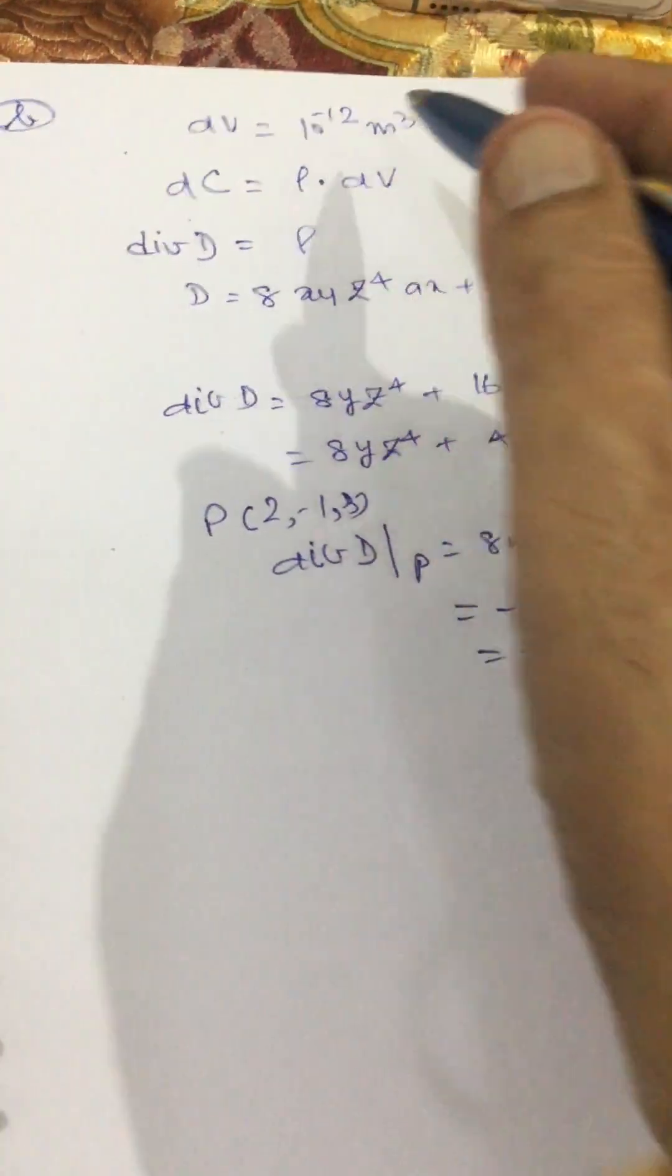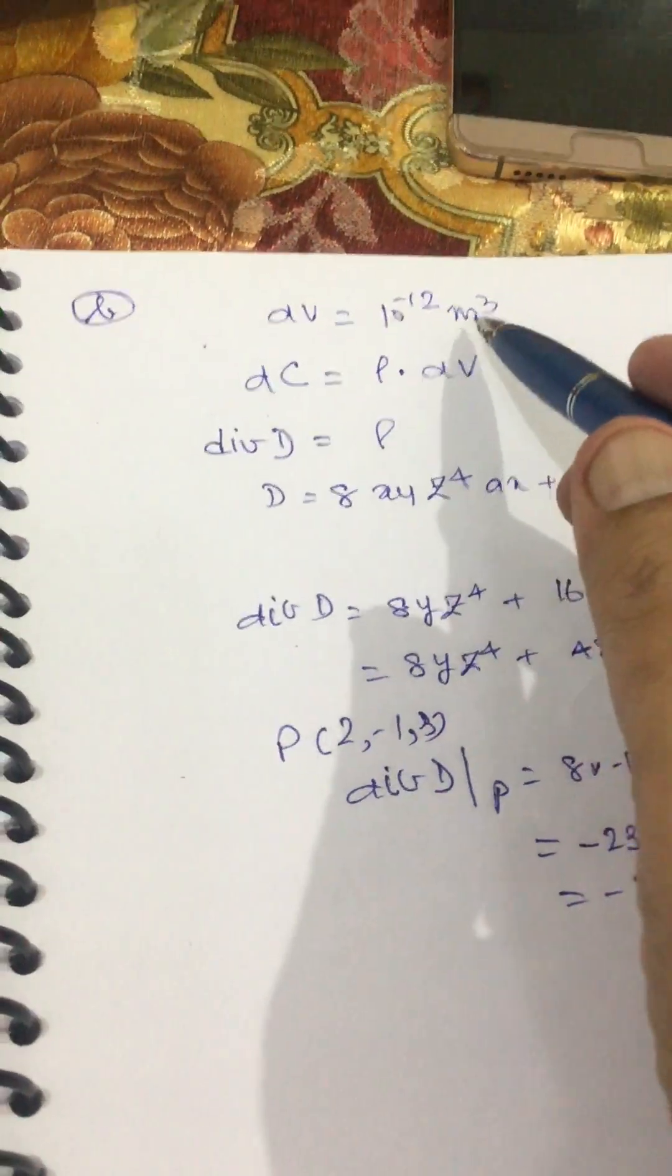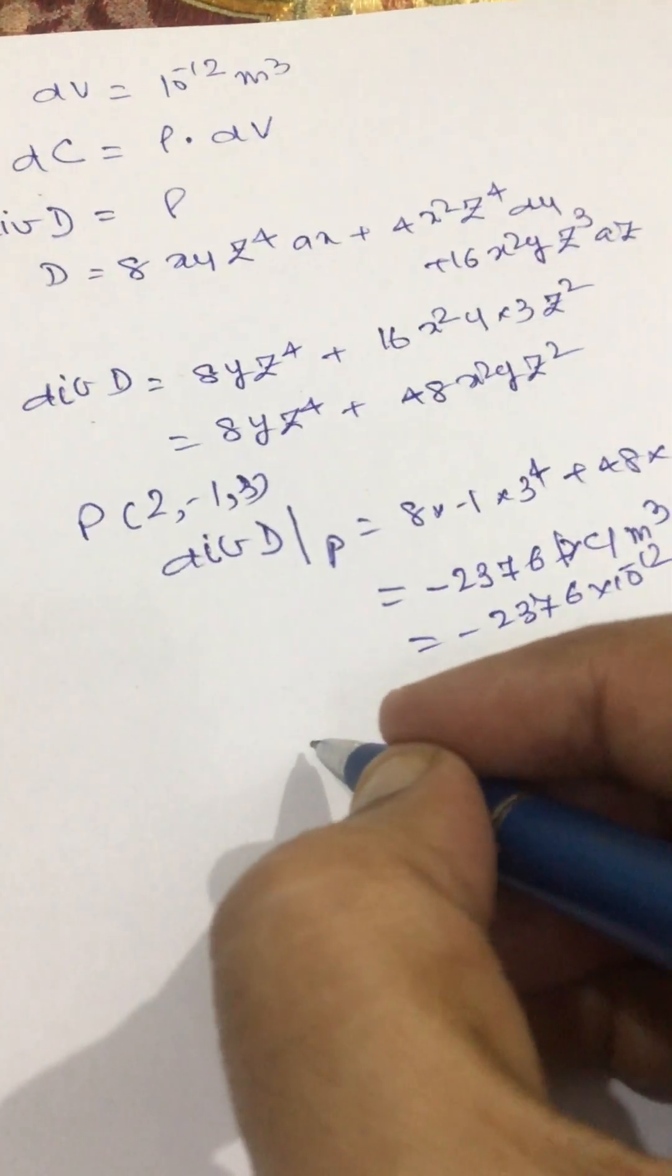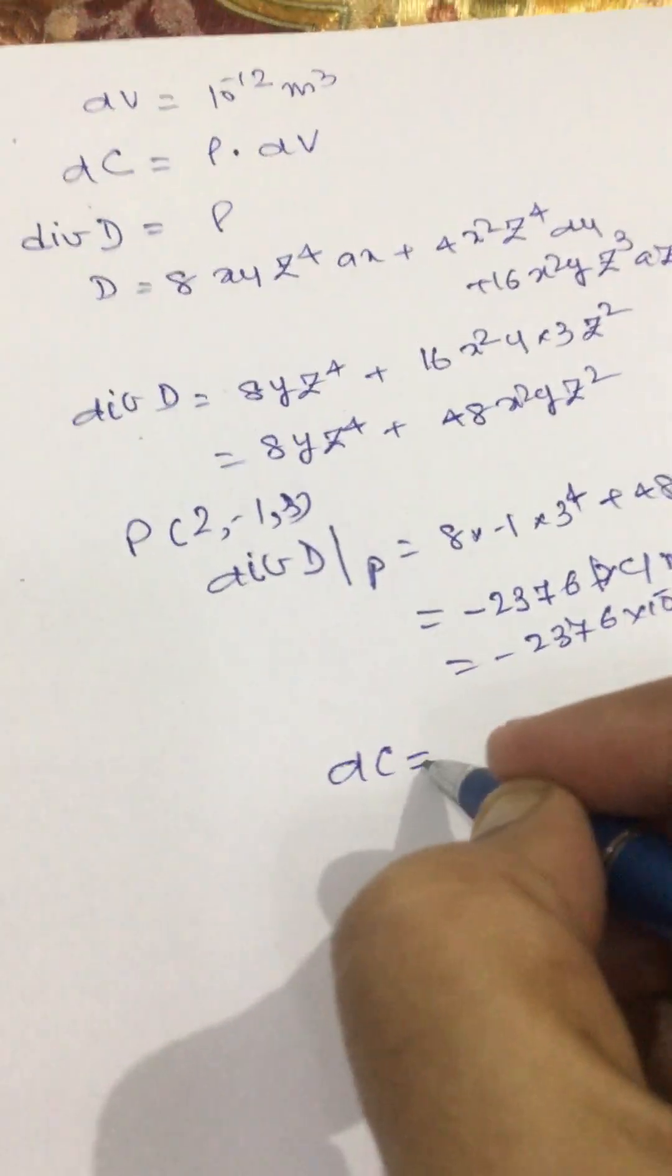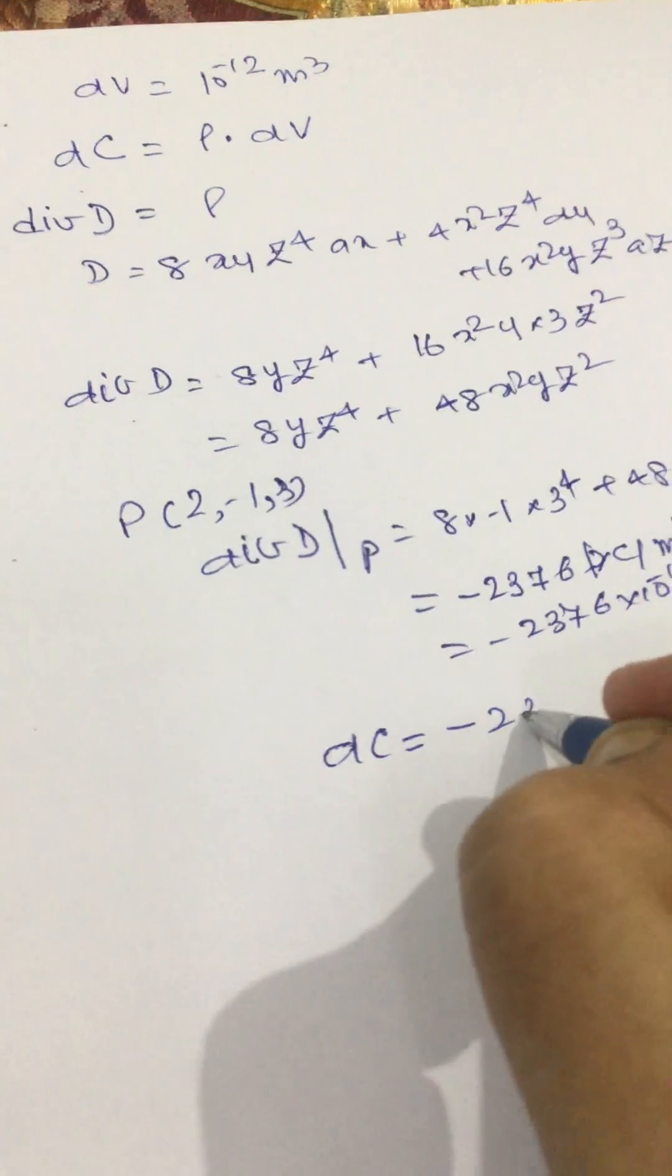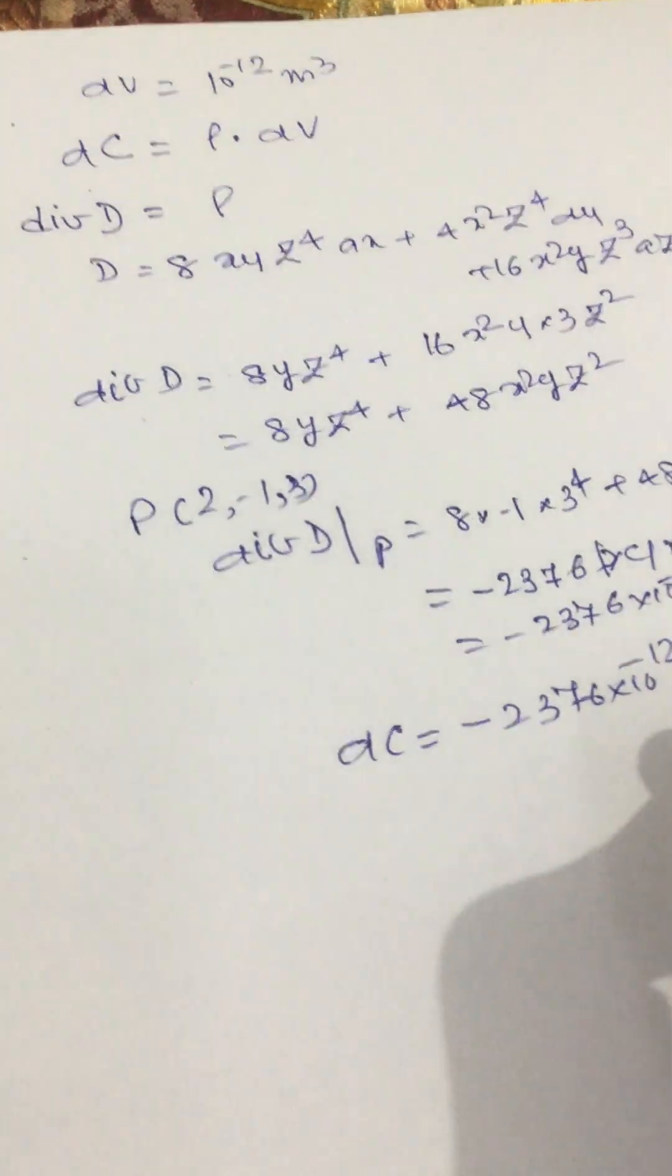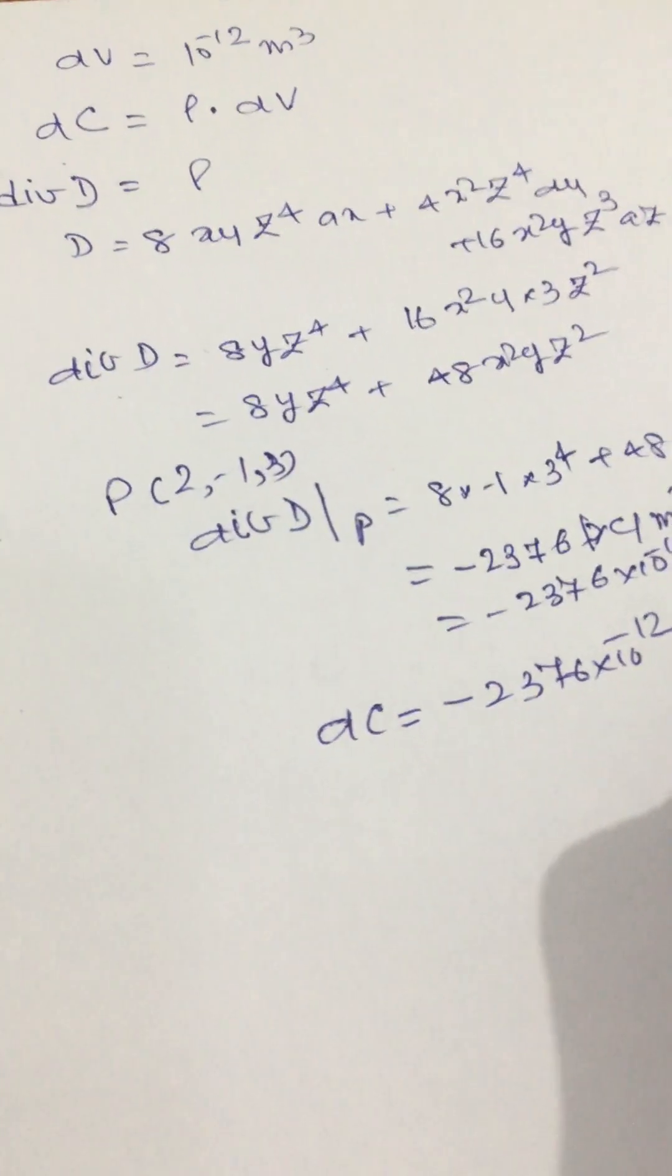So charge contained in the volume, that is 10 to the power -12 meter cube, will be dC equal to -2376 into 10 to the power -12 into 10 to the power -12 coulomb.